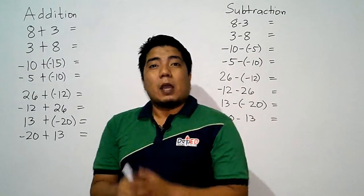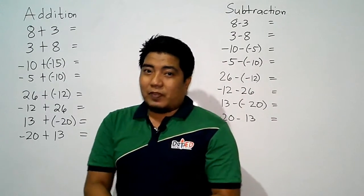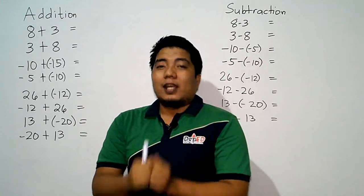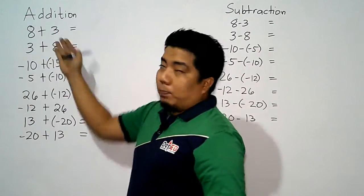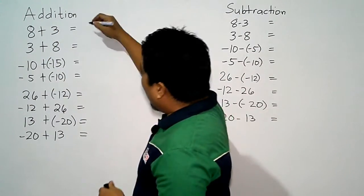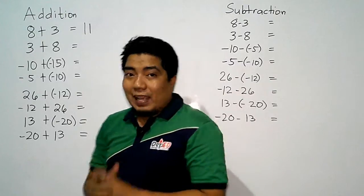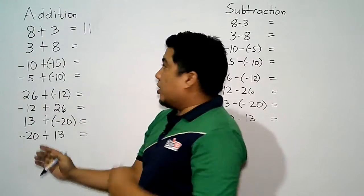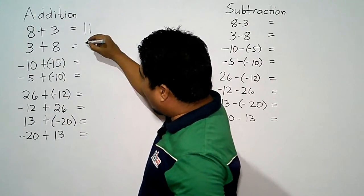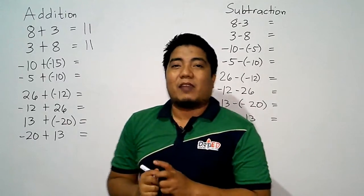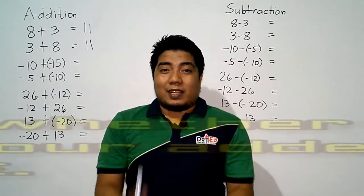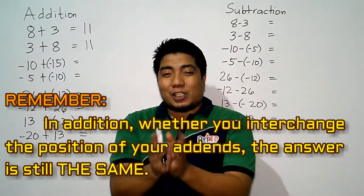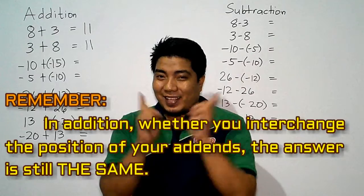8 plus 3 — that means positive plus positive. We just add them directly and copy the sign. Since both are positive, we add 8 and 3 and get positive 11. The same goes if the two addends are interchanged: 3 plus 8 is also equal to positive 11. Remember, in addition, whether you interchange your two addends, the answer is still the same.